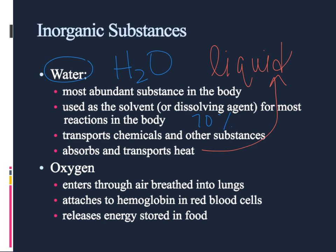The next inorganic substance important to you is oxygen, and we pretty much always see this in pairs. Oxygen doesn't like to be on its own, so it always tries to find a partner — oftentimes just another oxygen — making O2. We use this for our metabolism, for breaking down food and creating energy, and we get it most often through breathing in our lungs.